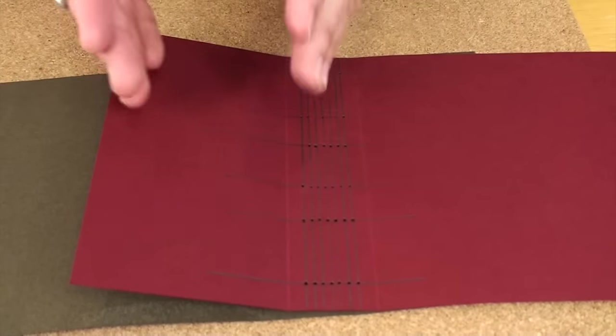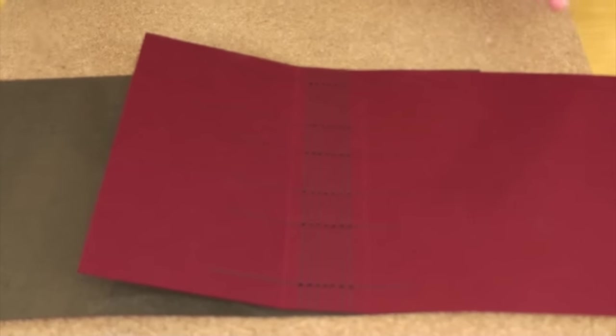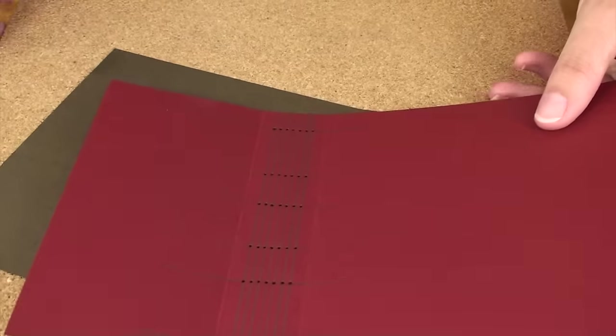So now all of my stitching rows are ready to go on my covers. You could literally stitch the book together at this point, but I'm going to add another step that makes it even a little more fancy. For that, we need a craft knife and a cutting mat.